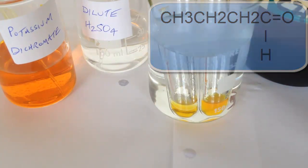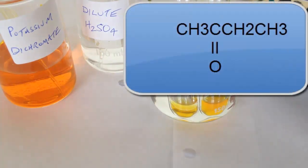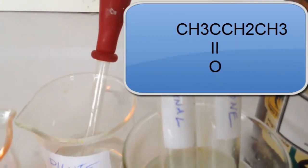However, look at the structure of butanone and you'll see that the carbon of the carbonyl group does not have a hydrogen directly attached. As a result, it is unable to undergo oxidation and cannot behave as a reducing agent.